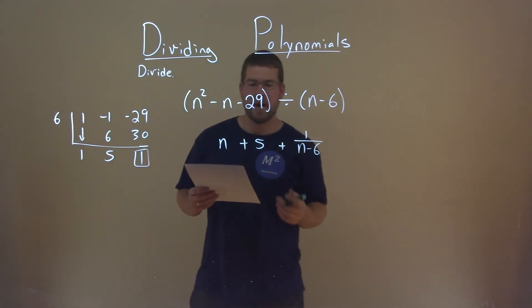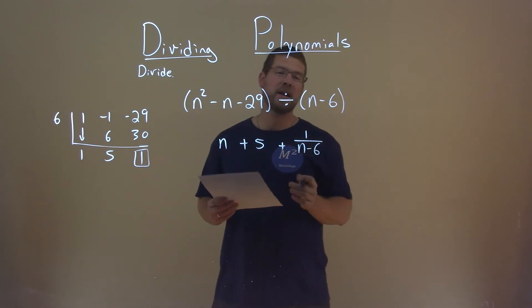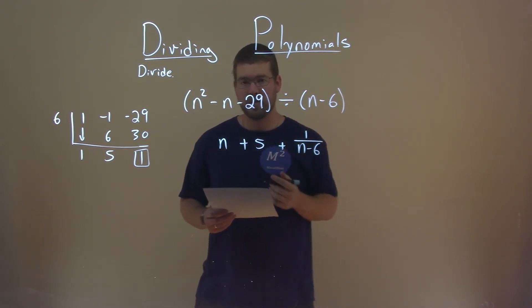And so there we have it, n plus 5 plus 1 divided by n minus 6 is our final answer.